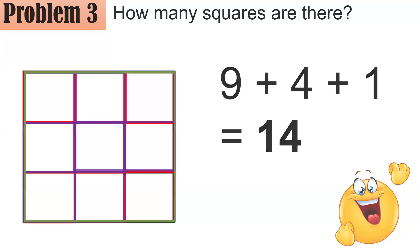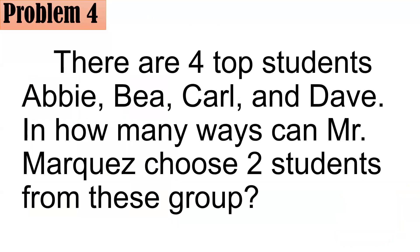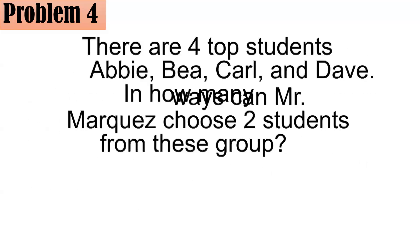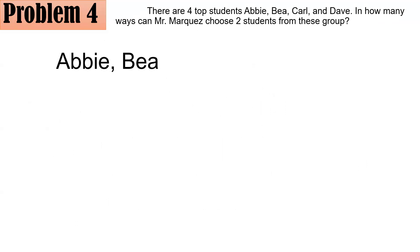Number four. There are four top students — Abby, Bea, Carl, and Dave. In how many ways can Mr. Marquez choose two students from this group? Note that when choosing two out of four, order does not matter. So for example, Abby-Bea is the same as Bea-Abby in this combination context. It makes no sense to write both, so order does not matter.